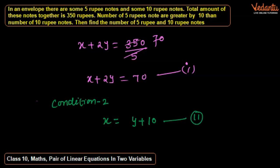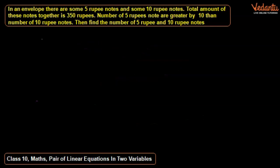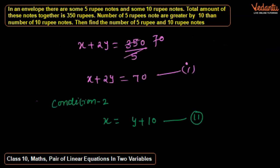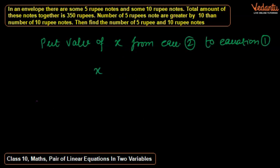Now put the value of x from equation two into equation one. Equation one is x plus 2y equals 70.